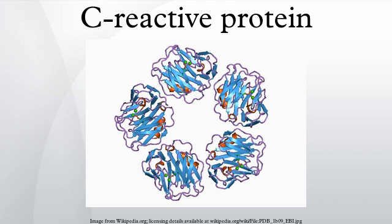C-reactive protein was the first pattern recognition receptor to be identified. CRP was so named because it was first identified as a substance in the serum of patients with acute inflammation that reacted with the C-polysaccharide of pneumococcus. Discovered by Tillett and Francis in 1930, it was initially thought that CRP might be a pathogenic secretion since it was elevated in a variety of illnesses, including cancer. The later discovery of hepatic synthesis demonstrated that it is a native protein.